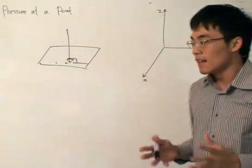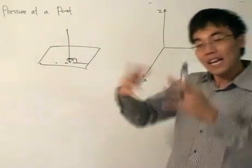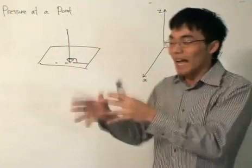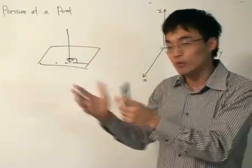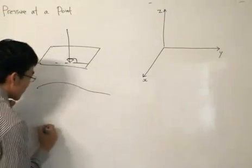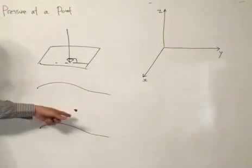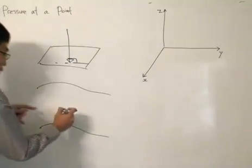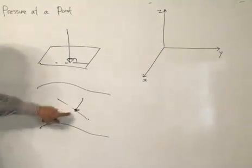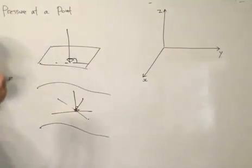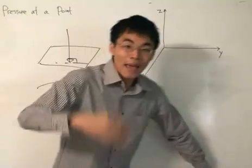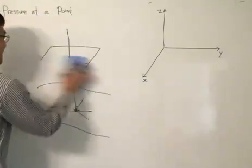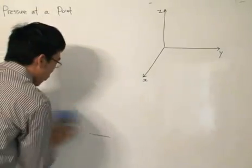In fluid mechanics, we want to find how pressure changes as the plane changes. If we locate a point in the fluid, we want to know what's the difference in pressure at that certain point depending on the plane that we choose. So if you've got water over here and we select a point in the water, there are a lot of planes we can generate, especially in three-dimensional space. So there are a lot of planes we can think of in the fluid, and therefore we want to know the different pressures acting on that point — or are they different? That's the key here in fluid mechanics.